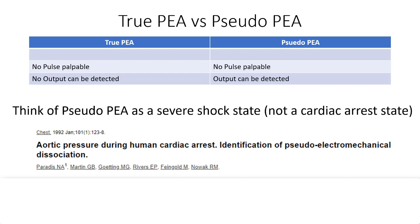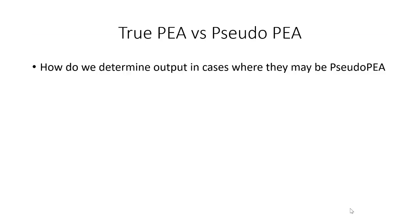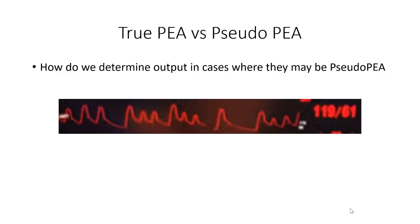Now, I know what some of you may be thinking — what difference does it make if there is output or not? If we don't feel a pulse, shouldn't we just do CPR anyway? Well, multiple studies have demonstrated that doing CPR in the setting of pseudo-PEA can lead to harm and affect filling of the heart and cardiac output. So there must be other strategies. One way to determine if there is output is to use an art line — probably the gold standard. An arterial line will tell you beat by beat the waveform of the pulse and a blood pressure. If the art line is flat, there is no output. If there's a waveform and a blood pressure reading, there is output.